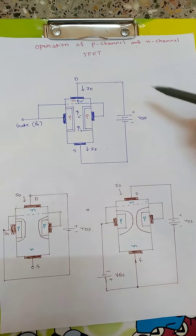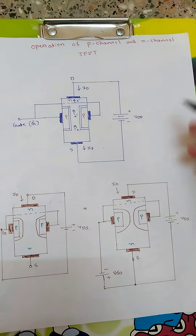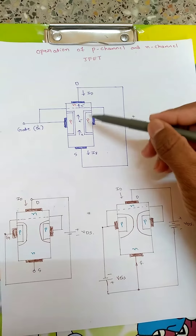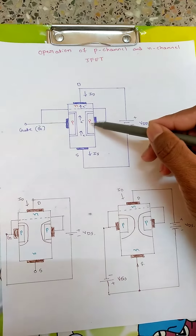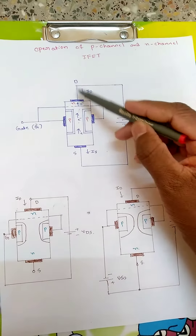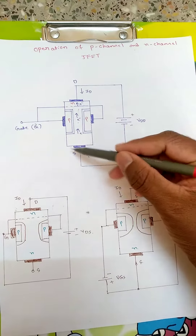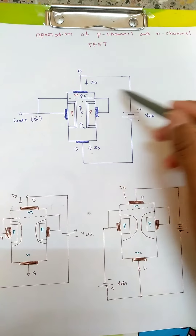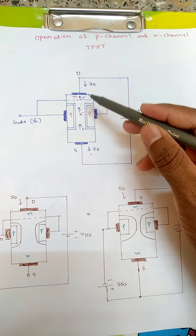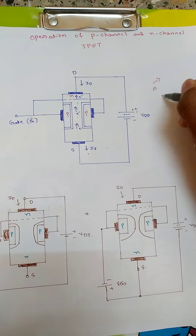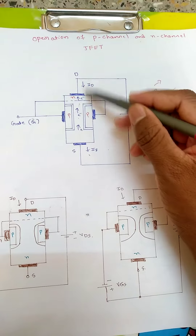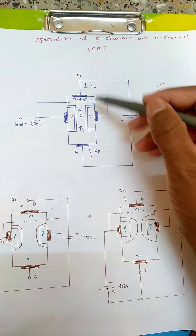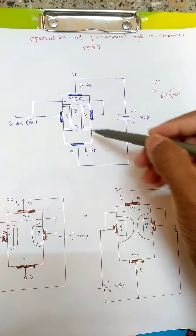Now coming to the topic — operation of P-channel and N-channel JFET. Both are similar, so here I have taken the example of N-channel JFET where N-type material is taken and P-type highly doped impurities are penetrated into it. A voltage is applied between drain and source, so electrons start moving towards the drain because it is the positive terminal. Since electrons move upward, the drain current flows in the opposite direction — downward.